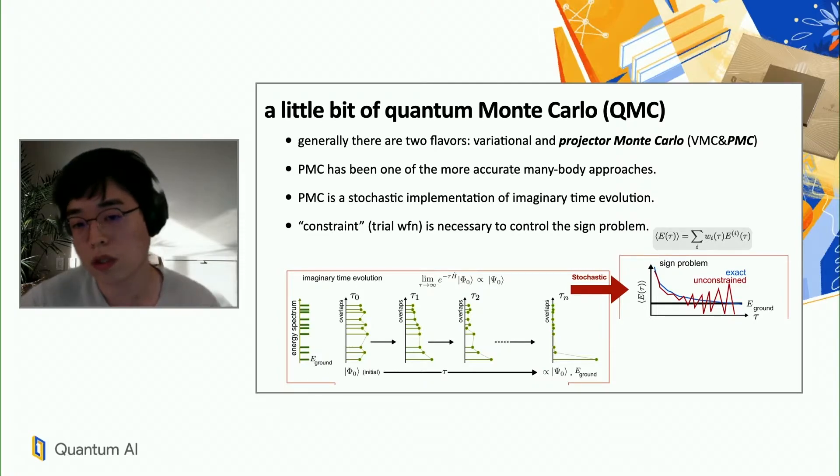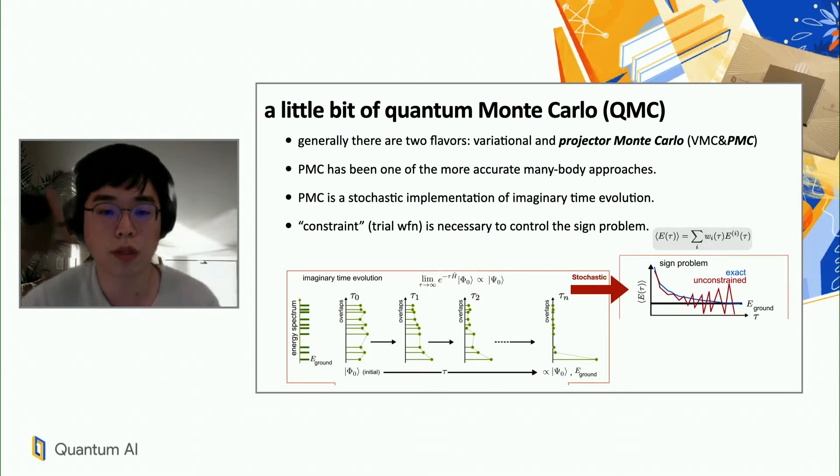So this is really what happens if you do imaginary time propagation stochastically without any constraint. And the origin of this is really the fermionic sign problem. Namely, in the weighted summation, the weights can take plus or minus sign and this alternating sign actually becomes a problem. And then imposing some constraint on the imaginary time propagation becomes necessary to control this sign problem.